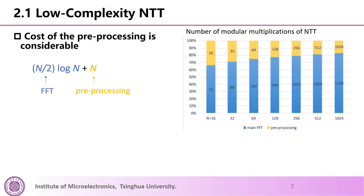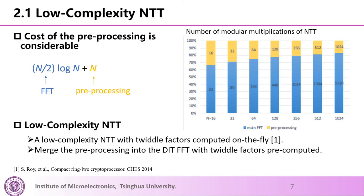In NTT, FFT requires half-N times log-N modular multiplications, and preprocessing requires N modular multiplications. For point size N being 1024, the preprocessing accounts for 17% of modular multiplications. The smaller the value of N, the higher the proportion: when N is 16, the ratio can be up to 33%. The cost of preprocessing is considerable when N is not large, so we find ways to eliminate the preprocessing to reduce the complexity of NTT.